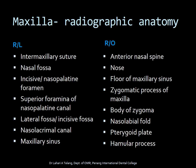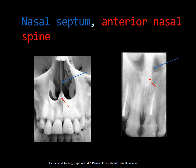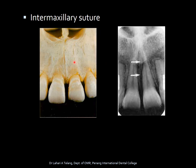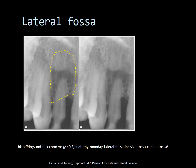Moving on, let's look at radiographic anatomy in the maxilla, with various radiolucent and radiopaque landmarks. The nasal septum is a thin bone, and the anterior nasal spine is a triangular or diamond-shaped radiopaque area. The nasopalatine foramen — where the nasopalatine canal exits on the anterior maxilla — appears as a radiolucent area. The intermaxillary suture, where both halves of the maxilla join, is apparent as a radiolucent line on the anterior maxillary radiograph. The lateral fossa is a small depression in the lateral incisor area caused by less bone density near the lateral incisor.